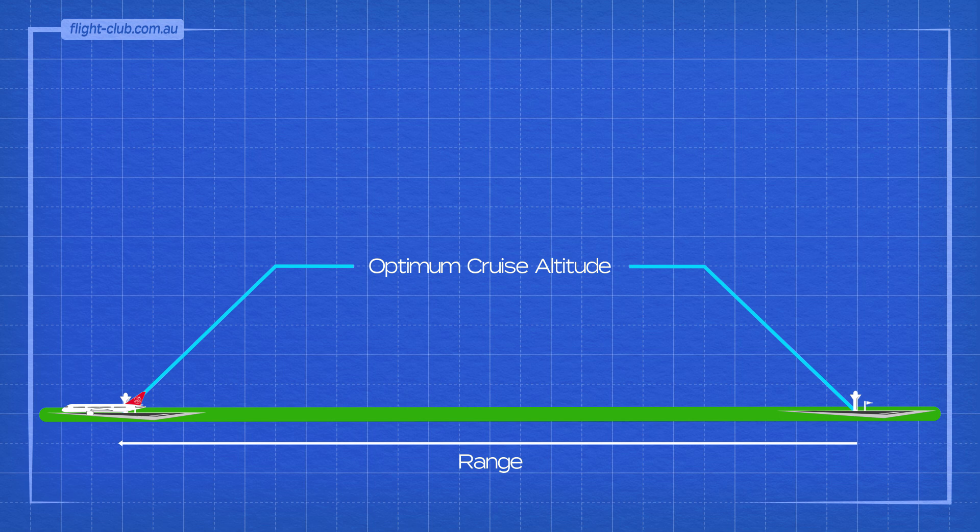The optimum cruise altitude usually lies between 35,000 and 42,000 feet. The optimum cruise altitude is not the same as maximum altitude for an aeroplane.